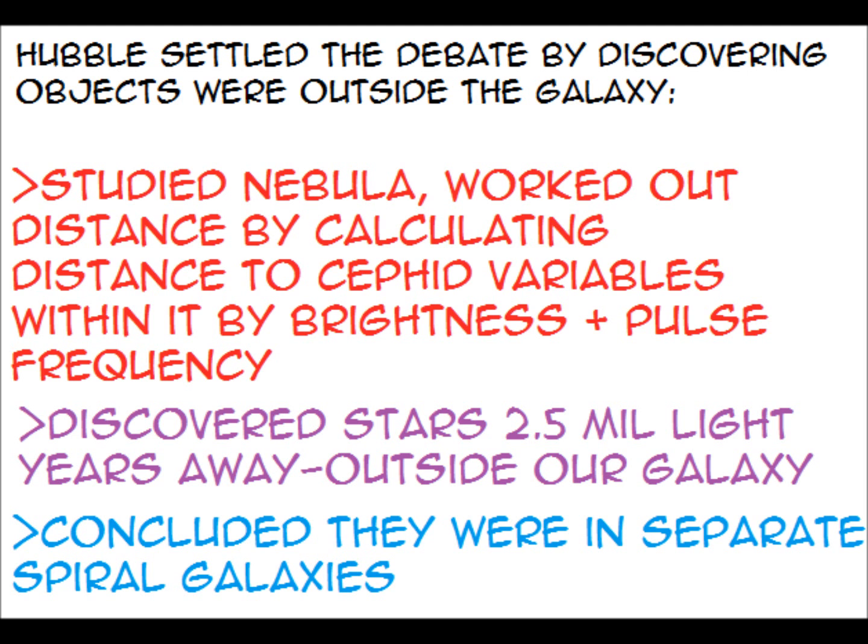Hubble's discoveries: Hubble settled the debate by discovering objects outside the galaxy. He studied nebulae, working out distances by calculating distances to separate variables within them by brightness and pulse frequency. He discovered stars 2.5 million light years away, much further than any stars in our galaxy. He concluded that they were in separate spiral galaxies.